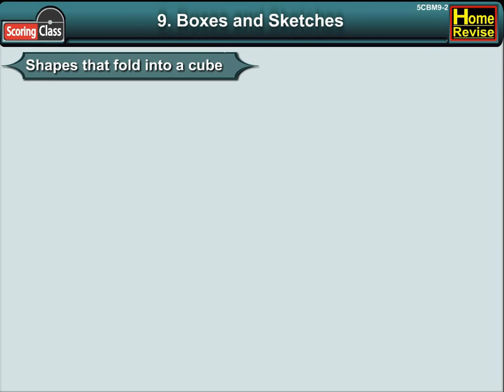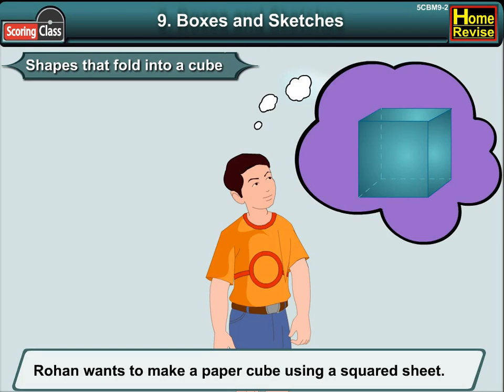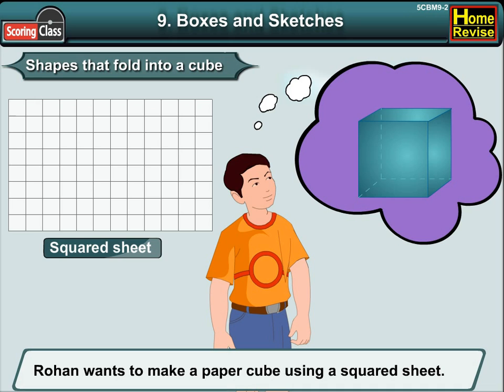Shapes that fold into a cube. Rohan wants to make a paper cube using a squared sheet. He knows that all the faces of the cube are squares. Intelligent of him.